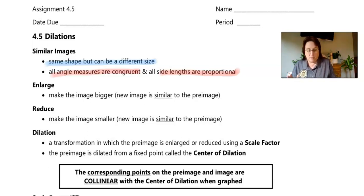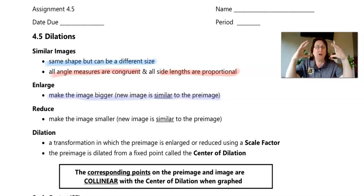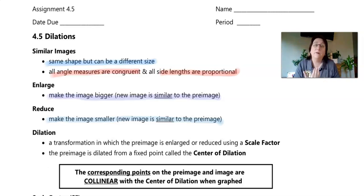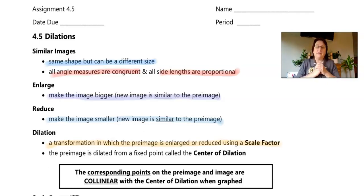The official term when you enlarge something - you make it bigger. The new image is similar to the pre-image. If I blow up a balloon, I enlarge it. To reduce means to make the image smaller - if I shrink the balloon, that is a reduction. The new image is still similar to the pre-image. Officially, a dilation is a transformation in which the pre-image is either enlarged or reduced using a scale factor.